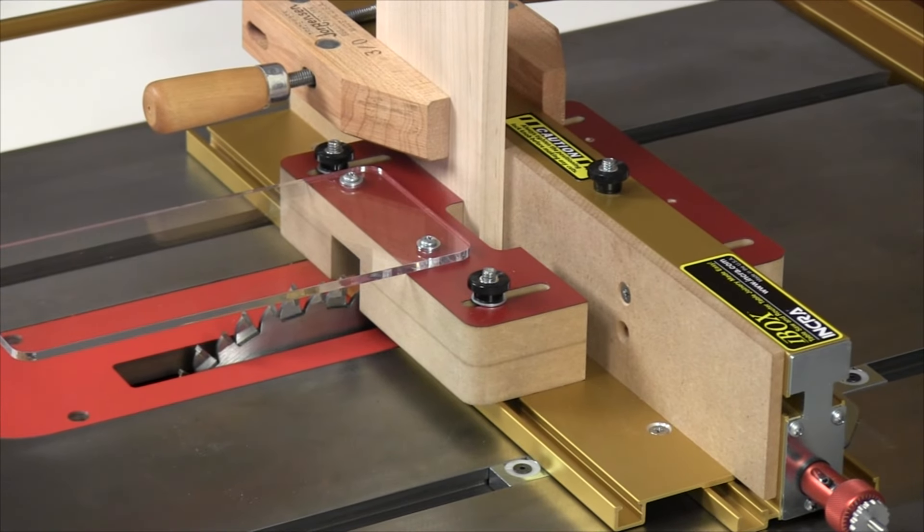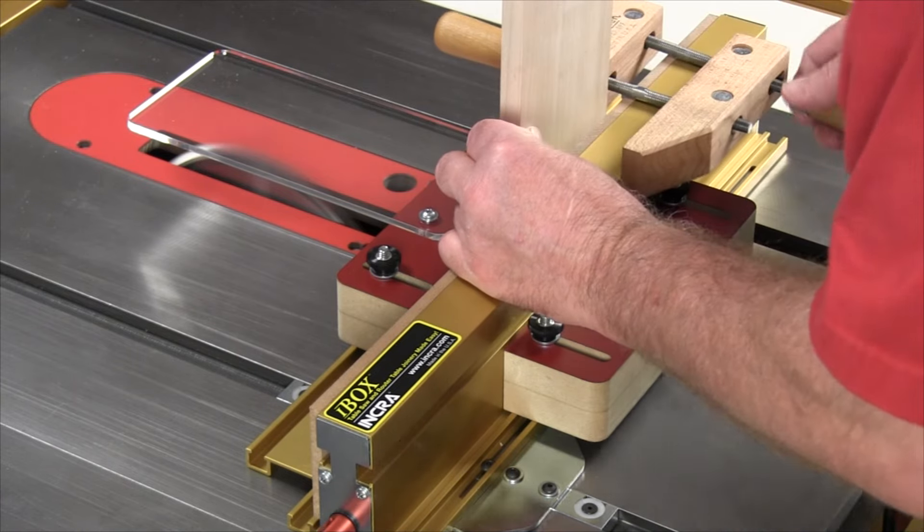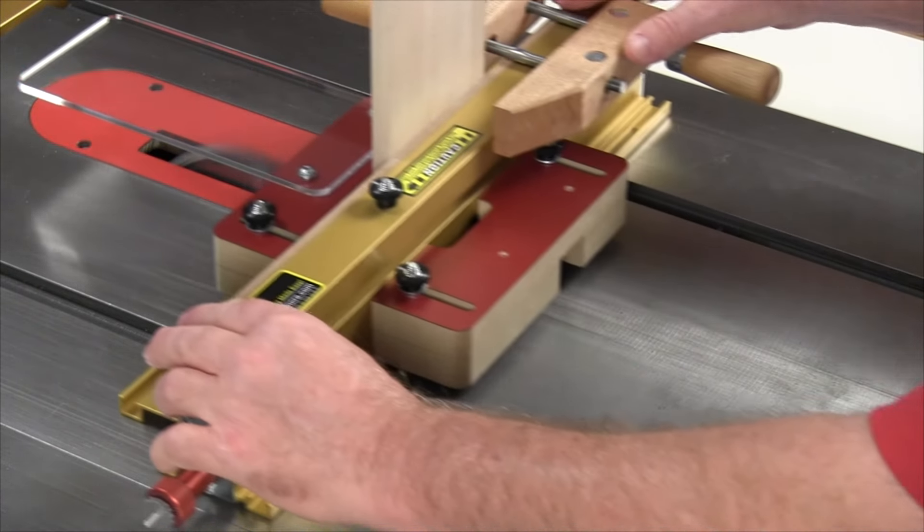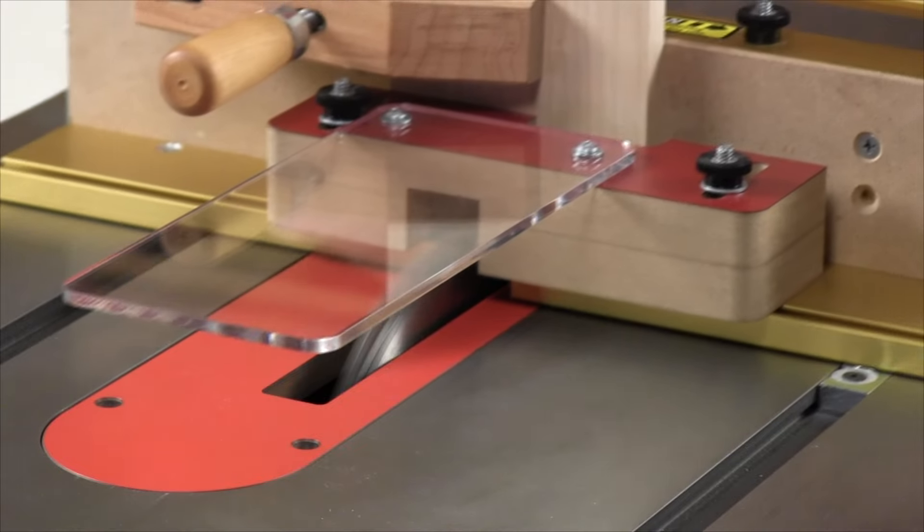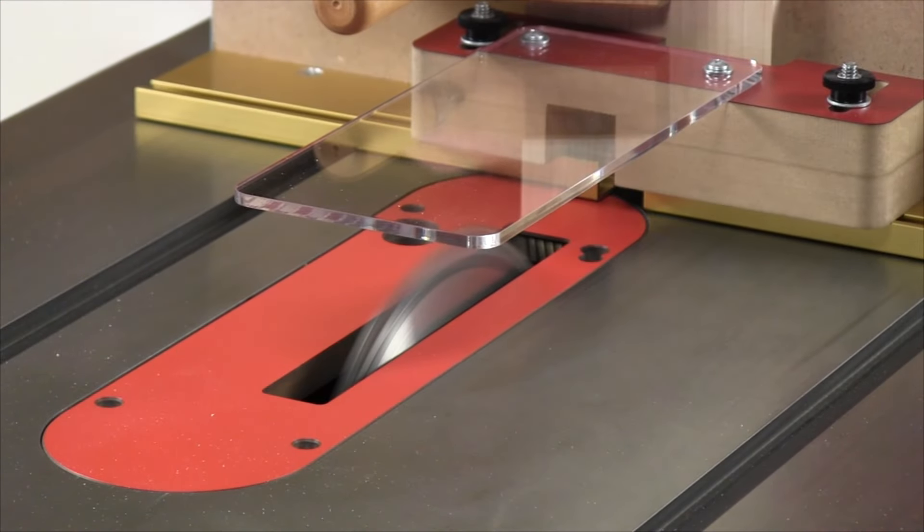Front and rear blade guards follow the number one tenant in woodworking safety, keeping your hands safely well away from the area of the cut, and the acrylic deflector shield increases operator's safety by deflecting sawdust back down to the table.